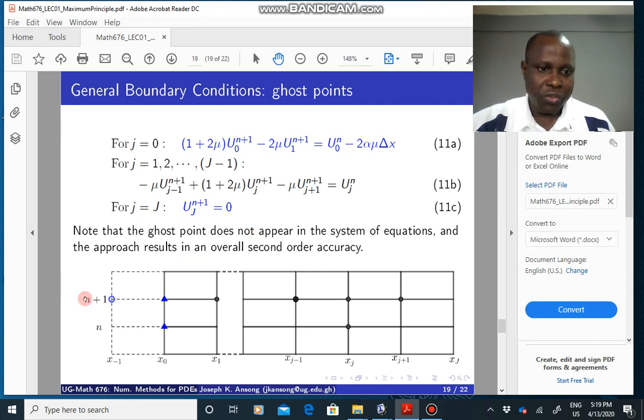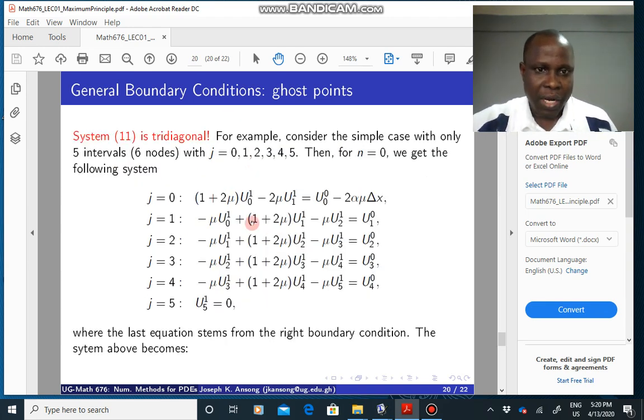Note that even though we introduced a ghost point here in order to derive this, but the resulting system of equation, system 11, has no ghost point. So that is important to take note of. There is no ghost point here. So you can basically just solve this. And so the system now is tridiagonal, which is very important and nice. You can see this if you just form a stencil with only 5 intervals or 6 nodes, j equals 0 to 5.